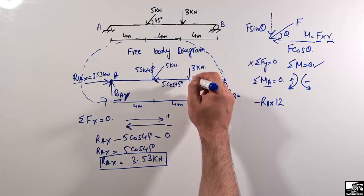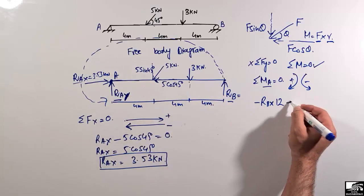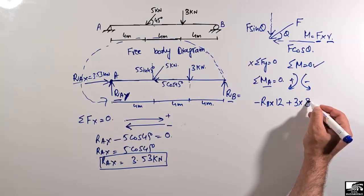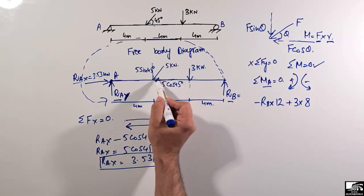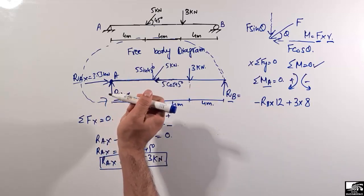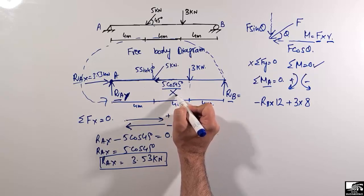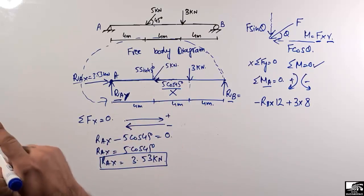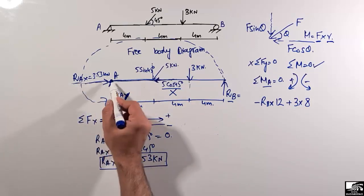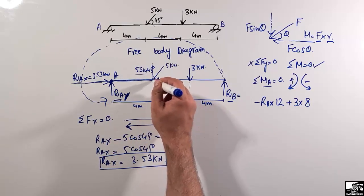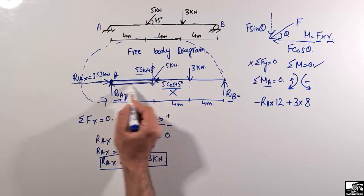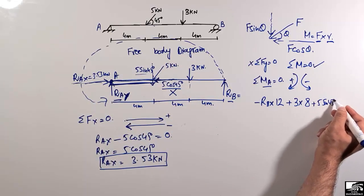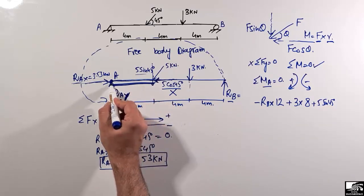The 3 kN load acts downward, creating a clockwise moment about A — positive: +3 × 8 meters (distance from that point to A is 4 + 4 = 8 m). The horizontal component 5·cos(θ) passes through point A, so it has zero moment arm and produces no moment. The vertical component 5·sin(θ) acts downward, creating a clockwise moment — positive: +5·sin(45°) × 4 meters.